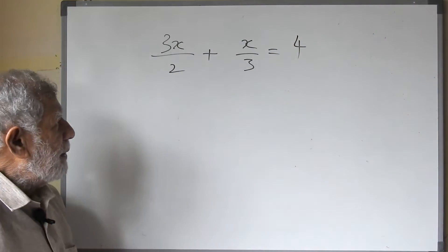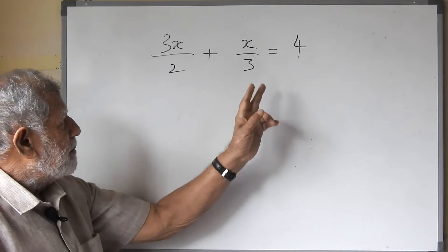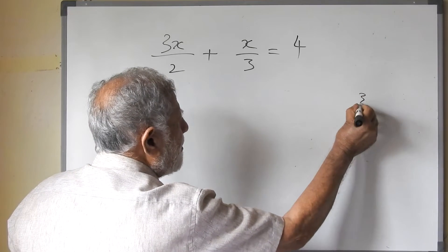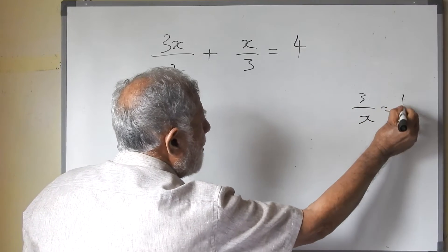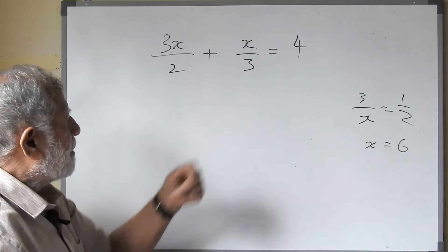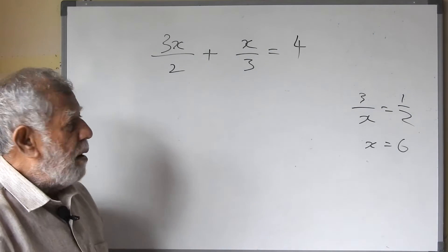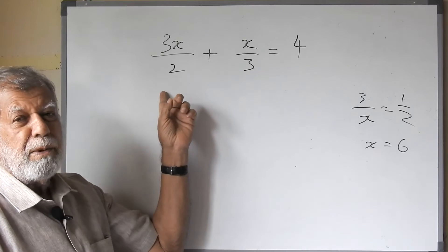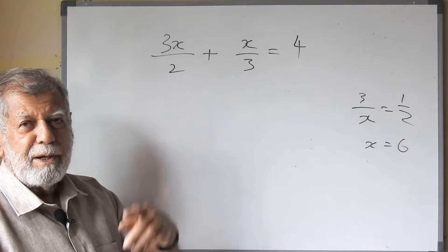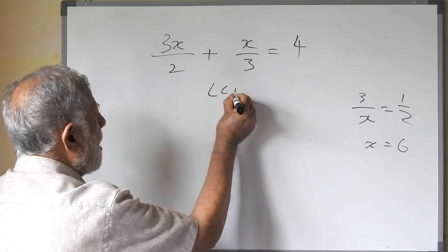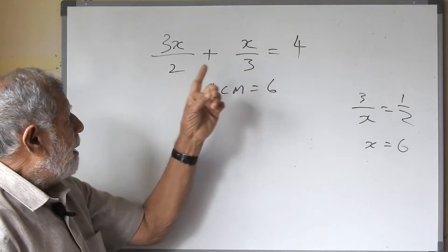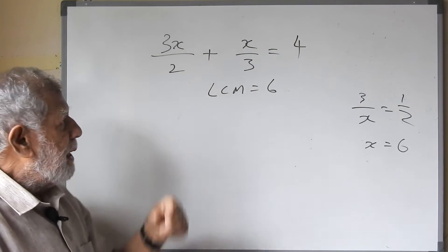Look at it — here there are 3 terms. So we cannot cross-multiply here, because cross-multiplication only works when you have something like x equals one-half — two terms. When there are more than 2 terms, you must always find the LCM for the denominators. The denominators are 3 and 2, so LCM is 6. Then multiply each and every term by the LCM — automatically the denominator will get cancelled.